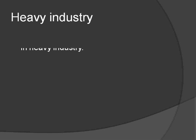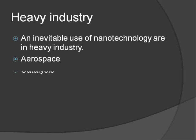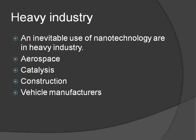Heavy industry also has inevitable uses of nanotechnology — including aerospace, where nanomaterials are used to make aircraft lighter in weight. Chemical catalysis benefits especially from nanomaterials due to their extremely large surface-to-volume ratio. In construction, nanotechnology has the potential to make construction cheaper, faster, safer, and more durable. Nanomaterials are also used in vehicle manufacturing.